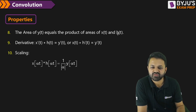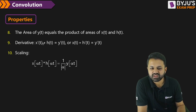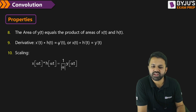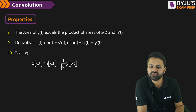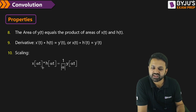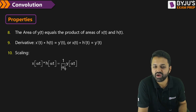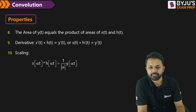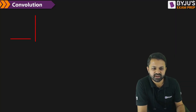Convolution with an impulse replicates the signal: x of t convolved with the impulse gives the signal itself; if it is a shifted impulse, you get a shifted signal. Starting and ending indices of y of t equal the sums of the starting and ending indices of x of t and h of t. The area of y of t equals the product of the area of x of t and the area of h of t. Derivatives: x'(t) convolved with h(t) equals y'(t) — if any one of the convolved signals is a derivative, the output is also the derivative of y of t. Scaling: x(alpha·t) convolved with h(alpha·t) gives (1/|alpha|) · y(alpha·t).